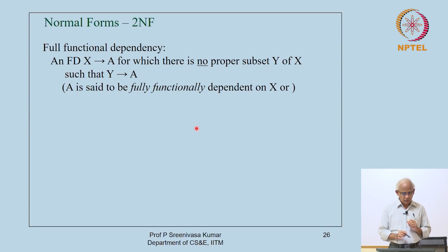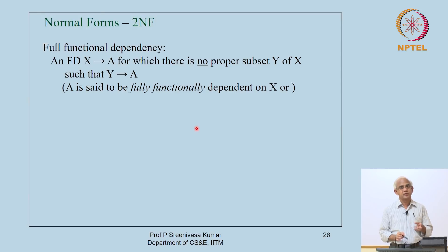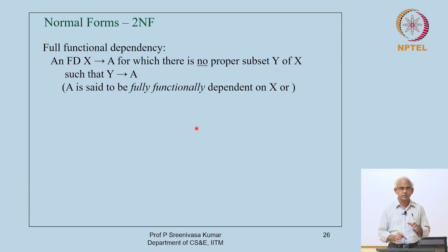In order to define second normal form, recall that the first normal form is simply the assumption that all values in all cells of the table are atomic pieces of data. That is built into the definition of relational databases itself, so we do not separately discuss first normal form — all relations are in first normal form by definition.